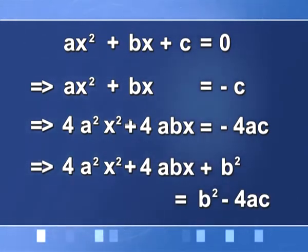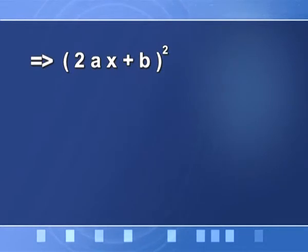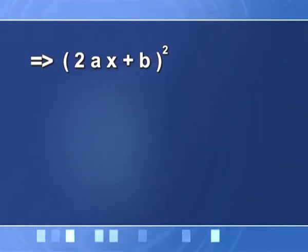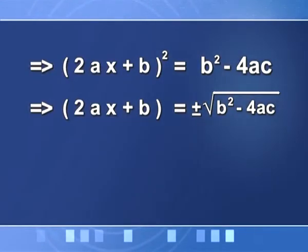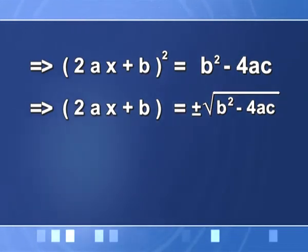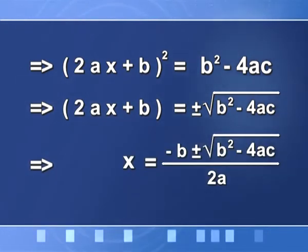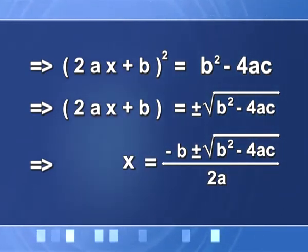The left hand side is the square of (2Ax + B), so (2Ax + B)² = B² − 4AC. Taking the square root, with ± sign: 2Ax + B = ± √(B² − 4AC). Shifting B to the right hand side and dividing by 2A gives x the same value as obtained by the other method. We can utilize this method to find the roots of the equation faster.